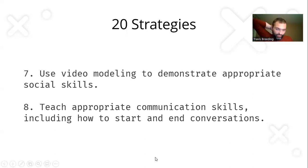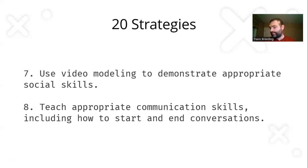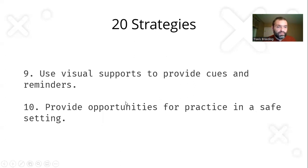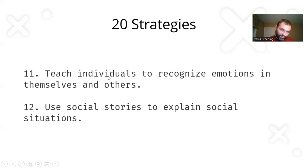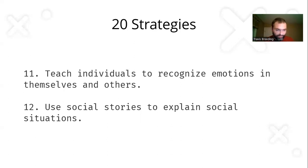Eight: use video modeling to demonstrate appropriate social skills. Nine: teach appropriate communication skills, including how to start and end conversations — I personally struggle with knowing when to enter or leave a conversation because I can't easily read the other person. Ten: use visual supports to provide cues and reminders. Eleven: provide opportunities for practice in a safe, natural setting. Twelve: teach individuals to recognize emotions in themselves and others — perspective taking and addressing mind blindness is very important. Thirteen: use social stories to explain social situations.